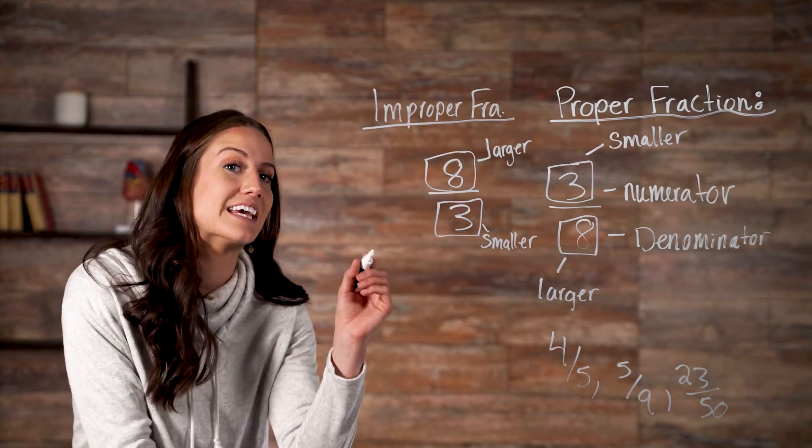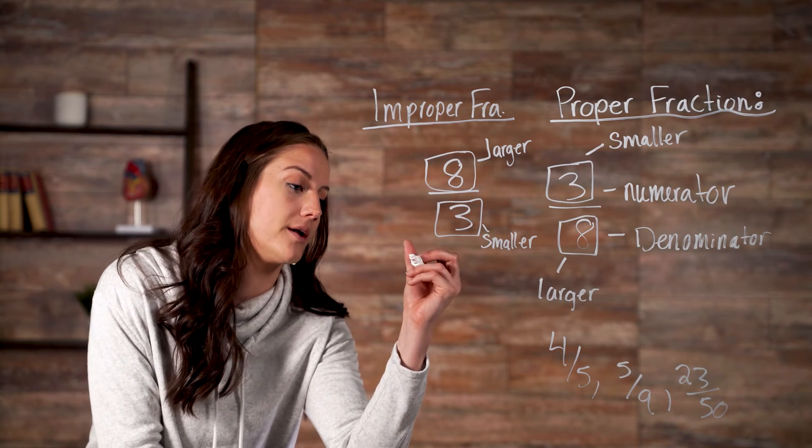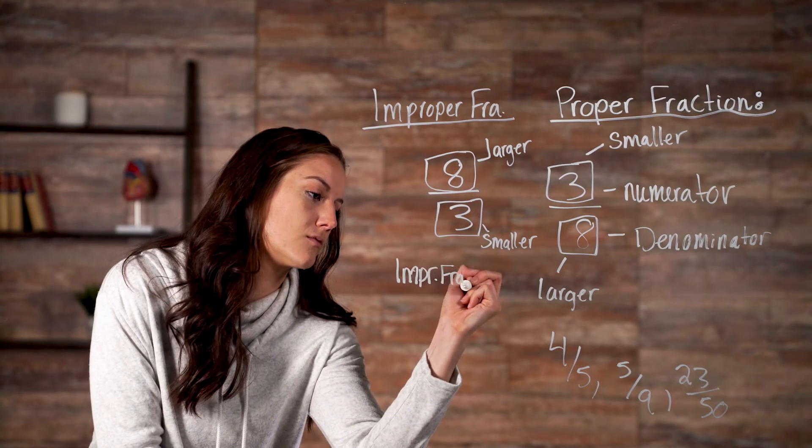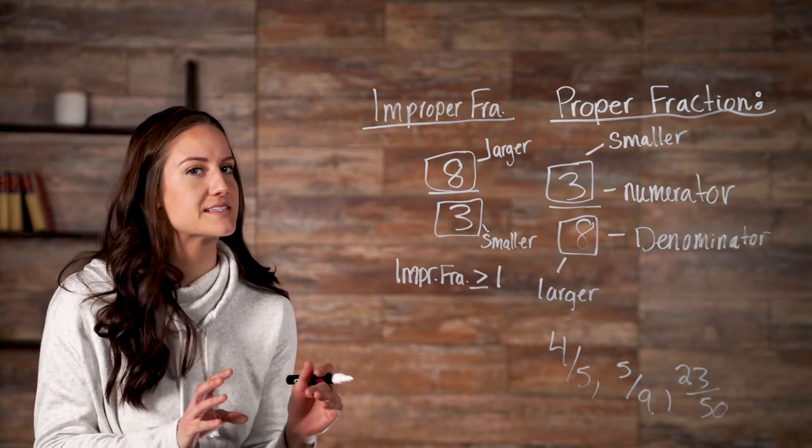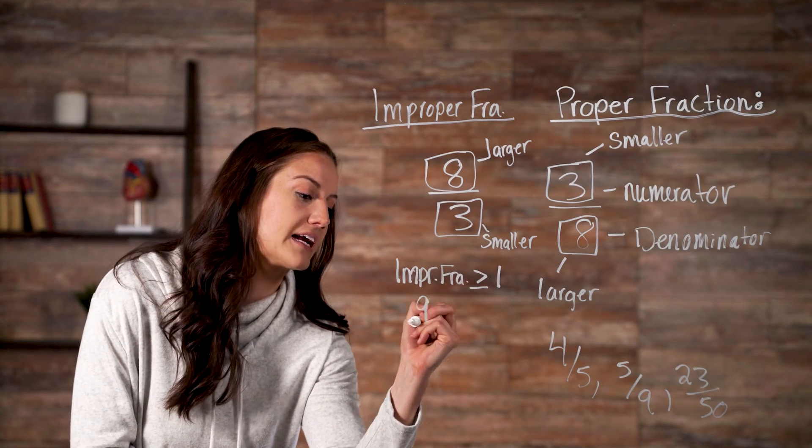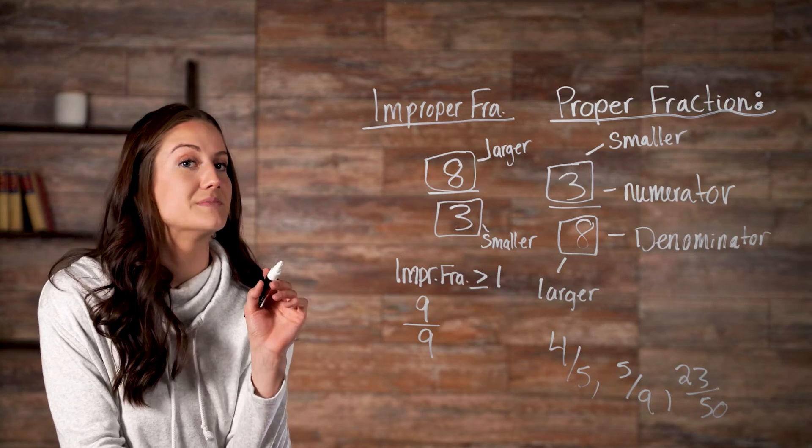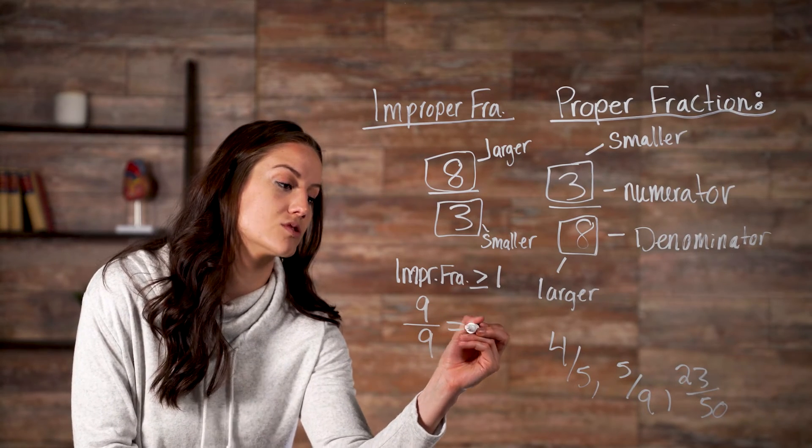Improper fractions are always equal to or greater than one. That means that nine over nine is an improper fraction, since it's equal to one.